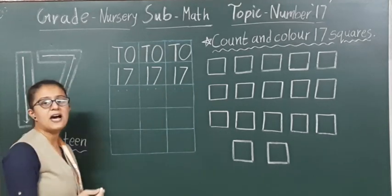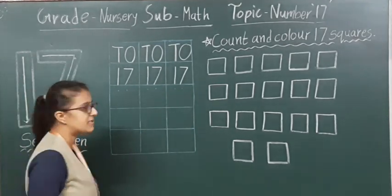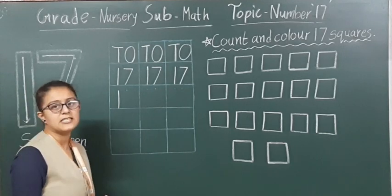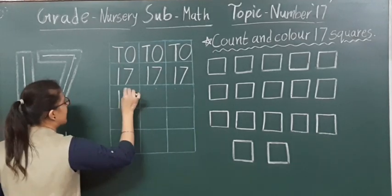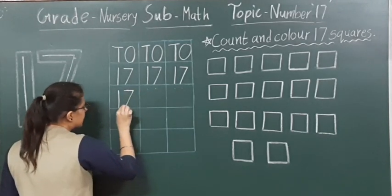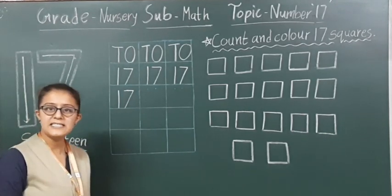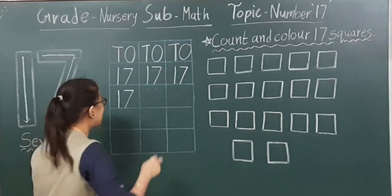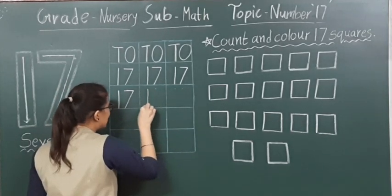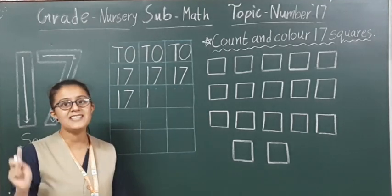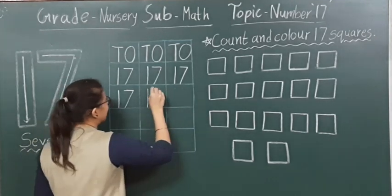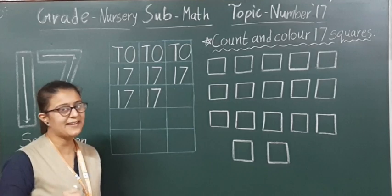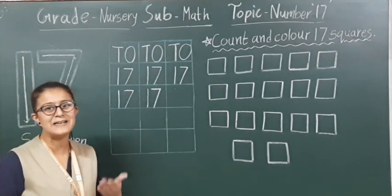Now we will write on the single given dots. Below the D, we have to write number 1, touching the bottom line, and below the O, we have to write number 7. That is one, seven — 17. Again, below the D, we have to write number 1, and then below the O, we have to write number 7 — one sleeping line and one slanting line. One, seven means number 17.